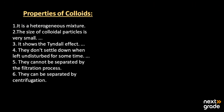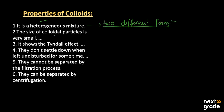Now, what are the properties of colloids? Mainly, colloids are a heterogeneous mixture — heterogeneous means there are two different forms. The particle size is very small, between 1 to 10³ nanometers, where 1 nanometer equals 10⁻⁹ meters. Colloids show the Tyndall effect.